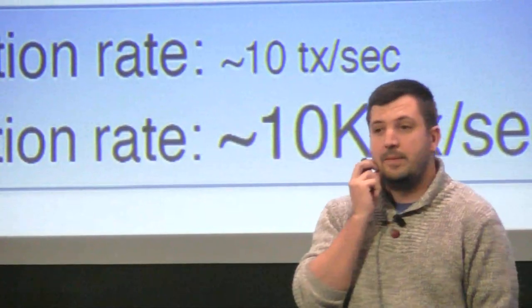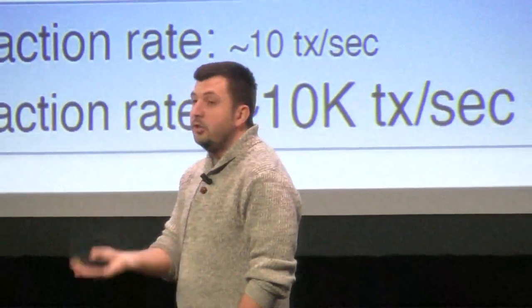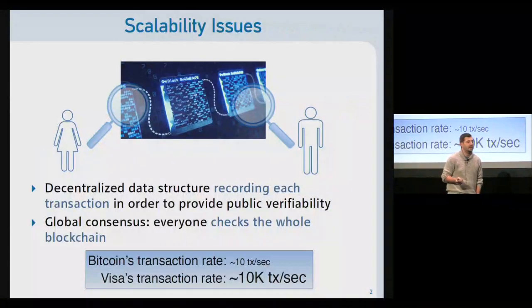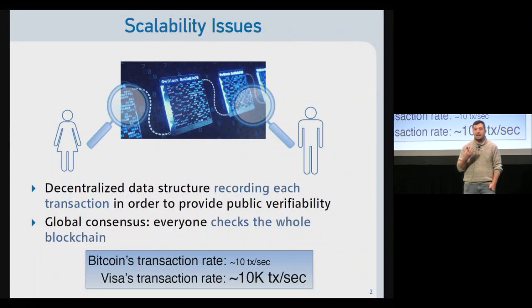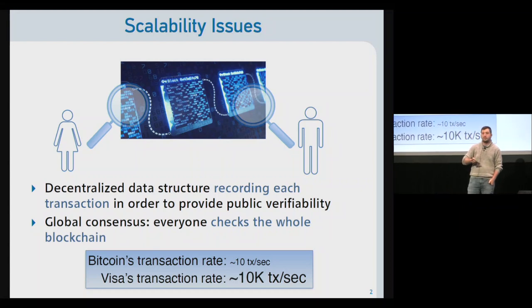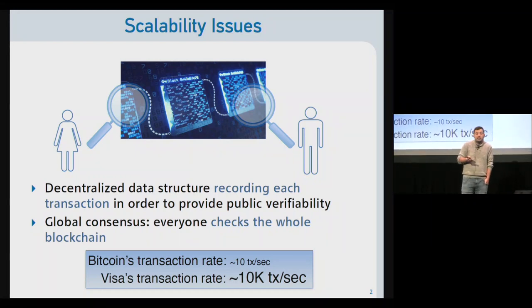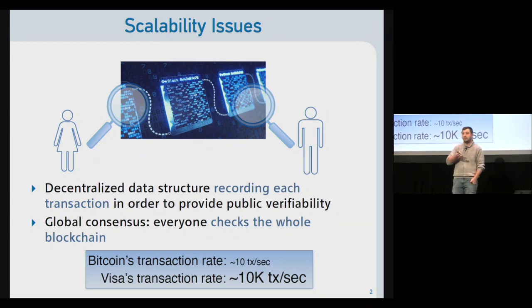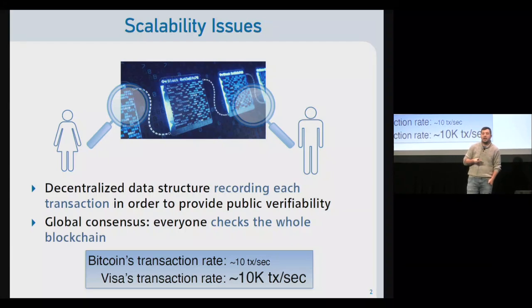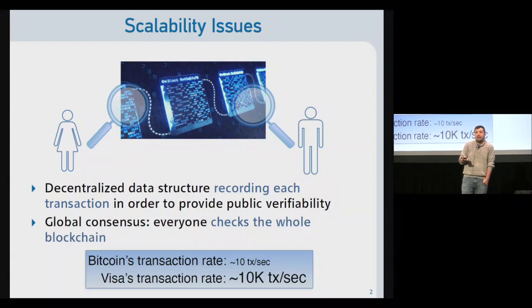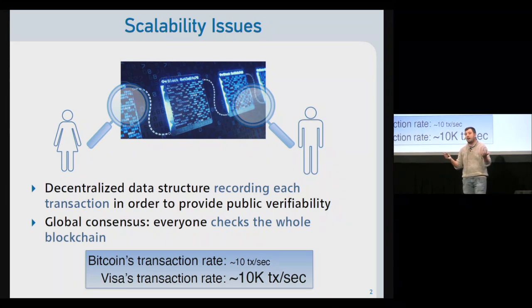Thank you for the introduction. Hello everybody, and thank you for attending my talk at this point of the conference. Today I'm going to talk about scalability problems. Bitcoin and many other cryptocurrencies have scalability issues because they rely on a decentralized data structure that records every single transaction. This provides public verifiability, but it requires global consensus that limits the transaction rate to around 10 transactions per second — far from what we have in systems like Visa or MasterCard.